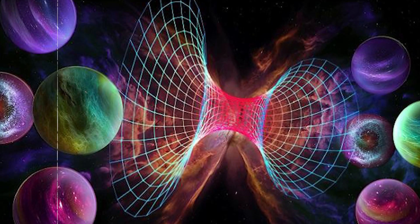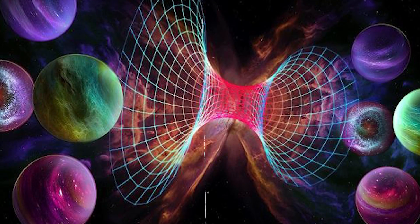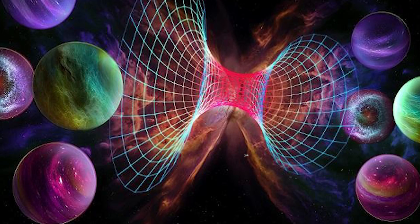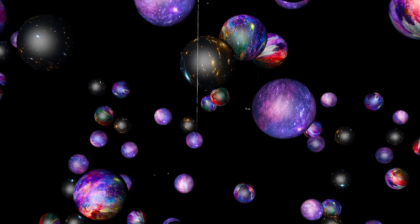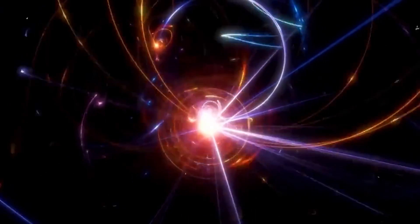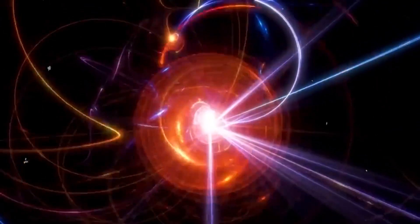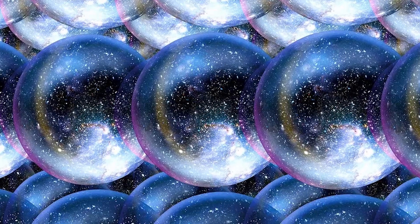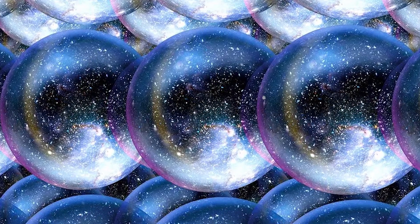Enter the many worlds theory, a concept suggesting that whenever we observe one outcome, another universe sprouts into existence, where a different outcome becomes reality. It's akin to our universe acting as a colossal tree, continually branching into countless versions of itself.